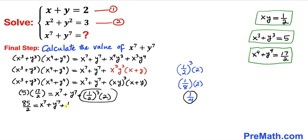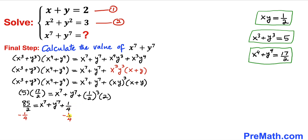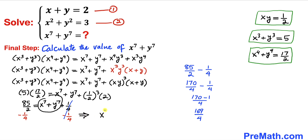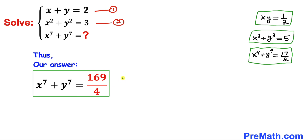Subtracting 1/4 from both sides, we get x⁷ + y⁷ = 85/2 − 1/4 = 169/4. Therefore our final answer is x⁷ + y⁷ = 169/4. Thanks for watching and please don't forget to subscribe to my channel for more exciting videos. Bye!